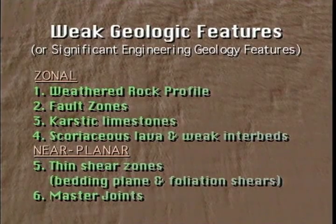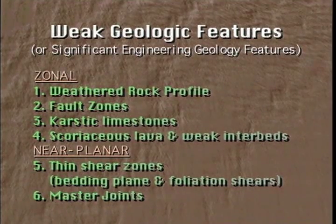In the late 1960s and 1970s when I was teaching engineering geology and applied rock mechanics at the University of Illinois and later at the University of Florida, I used the term 'significant engineering geology features' — to emphasize those weak geologic features that experience had shown could adversely influence dams and other engineering structures. These features exert their influence on dam behavior because they significantly affect one or more of the in-situ rock mass properties of modulus, shearing resistance, or permeability. Four of the features are three-dimensional or zonal in aspect: weathered rock profile, fault zones, karstic limestone, and interbedded volcanics with scoriaceous lava or weak clayey tuff. The other two significant features are narrow and of near-planar aspect: thin shear zones and master joints.